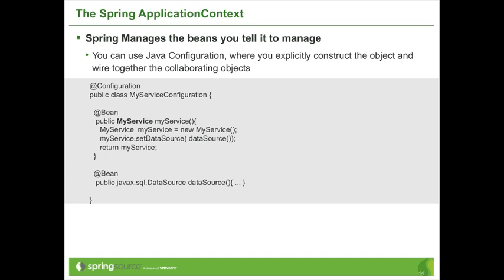When the method called myService is invoked, myService gets registered with the context and becomes available and managed by the Spring framework. You can also define a data source the same way using another @Bean method. When you invoke one method to get a reference to another, Spring intercepts that invocation — the return value comes from the cached version in the application context, so those methods are only called once by default and don't recreate a thousand data sources.